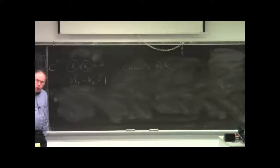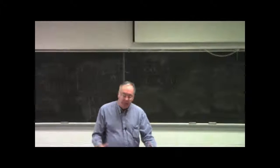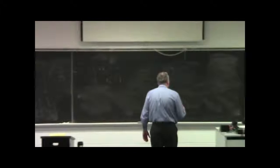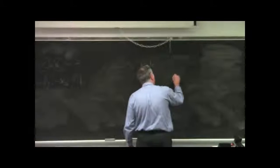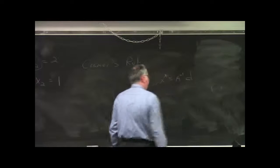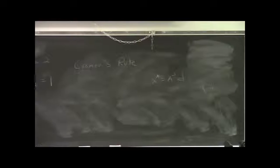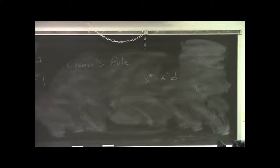For those of you interested in a more in-depth discussion, the book has a good derivation of how Cramer's rule can be derived from this equation. We have x star equals A inverse D. If you look in the book, they actually derive Cramer's rule from this equation, but I'm not going to go over that. Let me simply give you Cramer's rule.